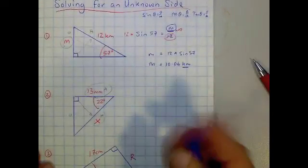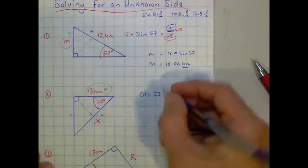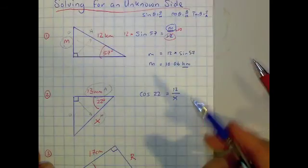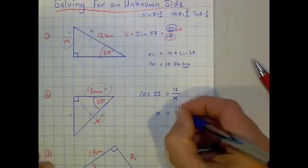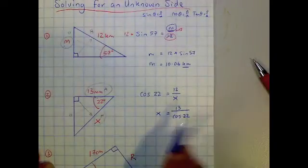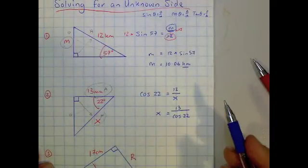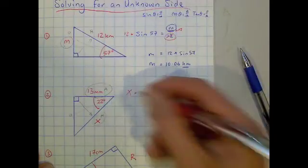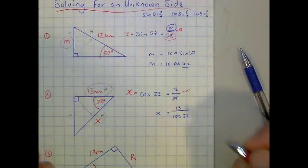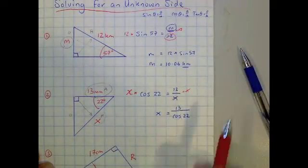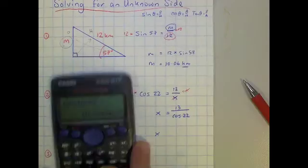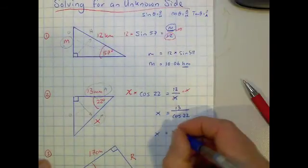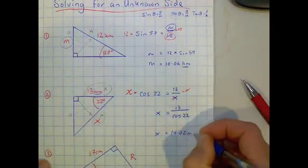We use cosine of the angle: cos(22) equals A over H, so 13 goes on top and X goes on the bottom. To solve for X, you multiply both sides by X, cancel the X's on the right, then divide both sides by cos(22) — or as the teacher said, just swap them. On the calculator go 13 divided by cos(22), and you get 14.02 — don't forget the units, millimeters.